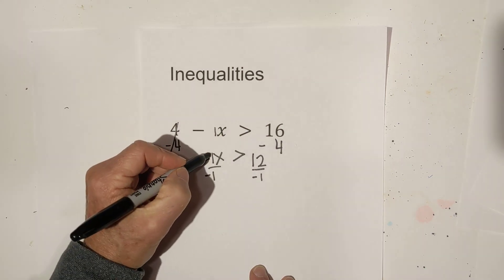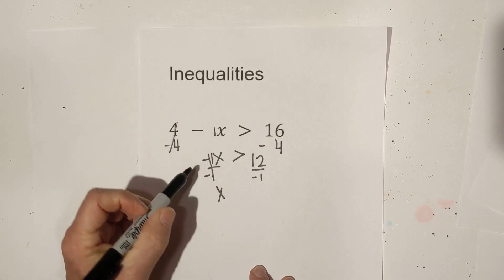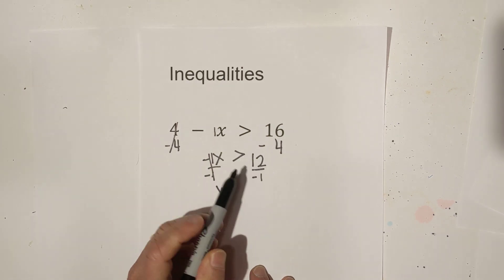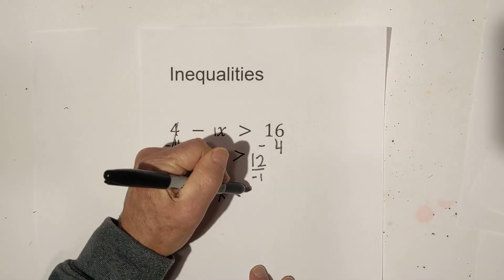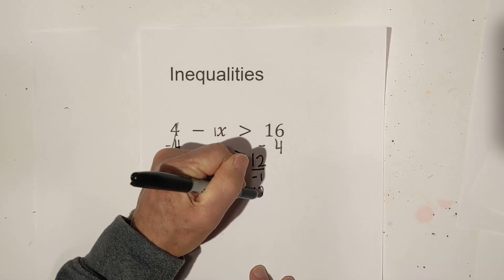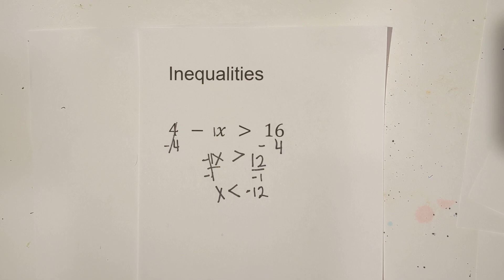So this means that these cancel. You have x. Remember anytime you divide by a negative with inequalities you flip the sign and that becomes now a negative 12 because when you divide a positive and negative it becomes negative. So there's example number one.